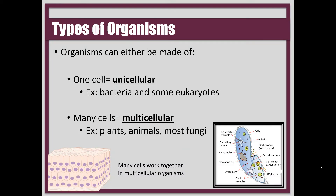We've mentioned the terms unicellular and multicellular. When we say unicellular, we mean that it's comprised of just a single cell. Some examples would be bacteria, and some eukaryotes are unicellular like the amoeba, paramecium, and even yeast. Multicellular means the organism is made of many cells — examples would be plants, animals, and most fungi. These cells, whether in unicellular or multicellular organisms, work together for a common function.